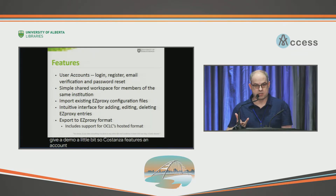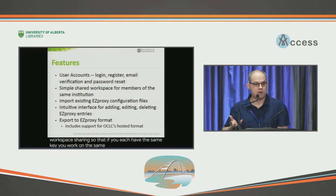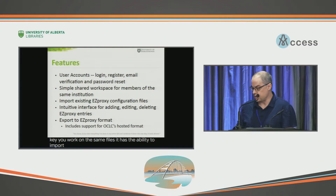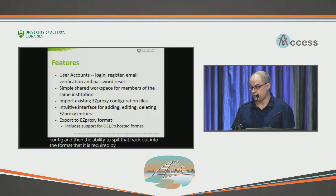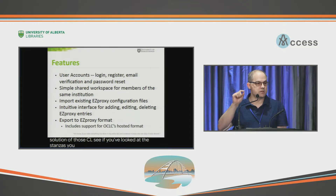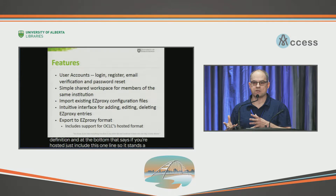Costanza features an account registration system. Because it stores things on the server, it needs to know who you are and what your data is. It has very simple workspace sharing so that if you each have the same key, you work on the same files. It has the ability to import your existing EasyProxy configuration, an intuitive interface for adding and deleting entries within your EasyProxy config, and then the ability to export that back into the format required by your EasyProxy server. For those on a hosted solution with OCLC, Costanza supports that as well — it will just spit out the piece you need for your hosted environment.